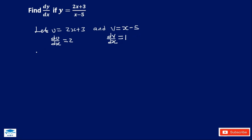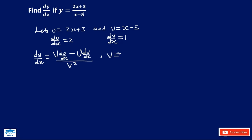The quotient rule states that dy/dx is equal to v times du/dx minus u times dv/dx, all over v squared, where v should not be equal to 0.